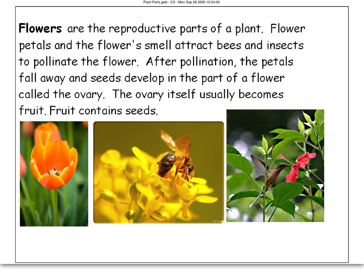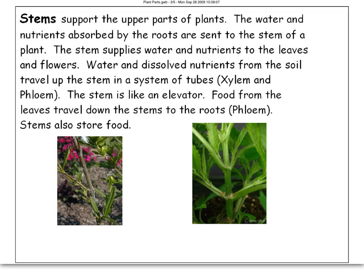Stems have two functions. The first function is that they support the upper part of the plants — think of the stem as a plant's backbone, so it provides support. The second function is that it's an elevator, a transport system for water and nutrients.